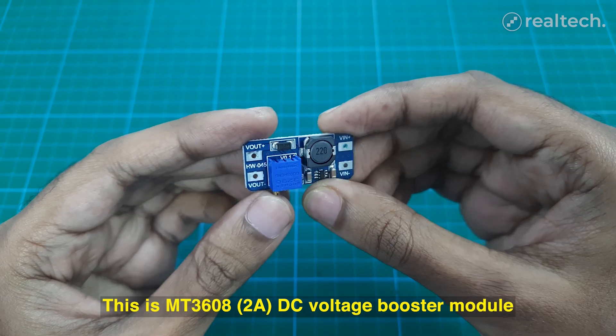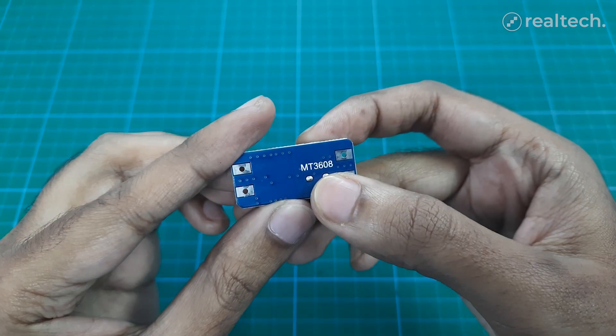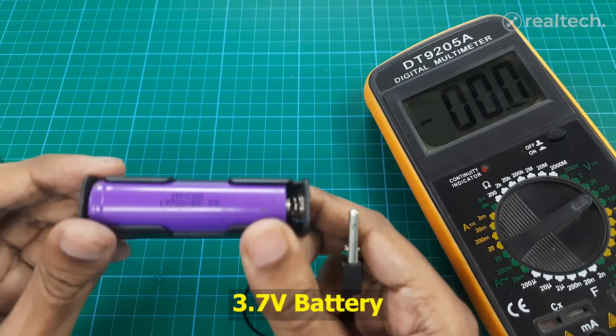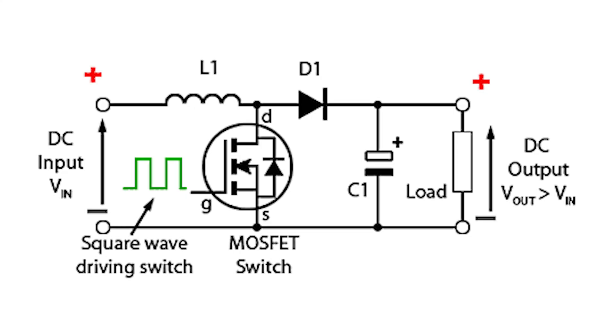Voltage boosters, or DC to DC step-up converters, increase low input voltage to a higher output voltage using inductors, MOSFETs, diodes, and capacitors.